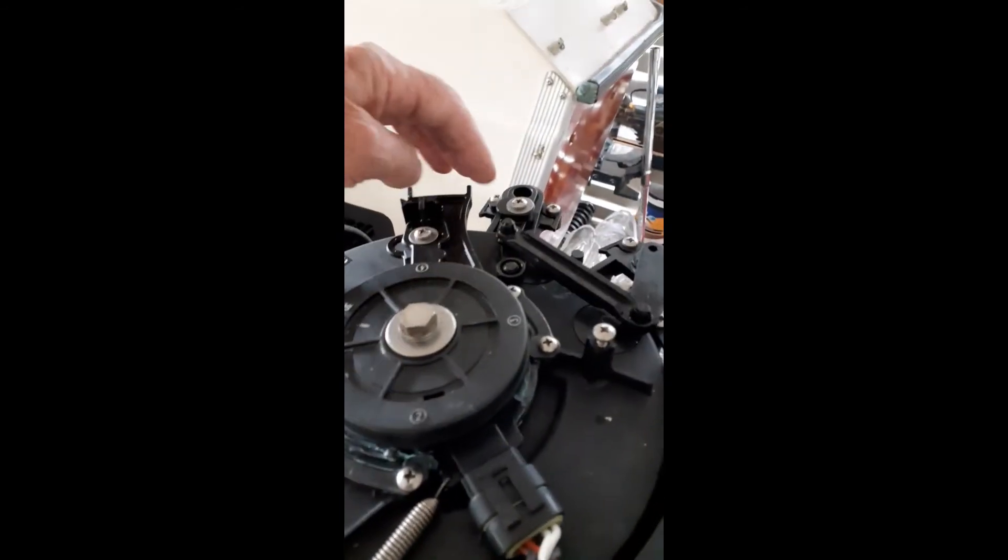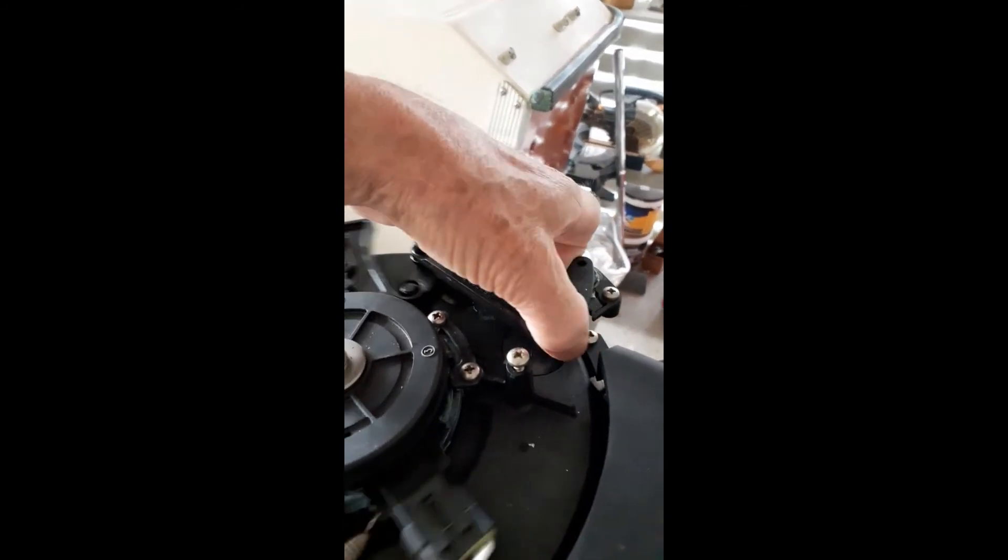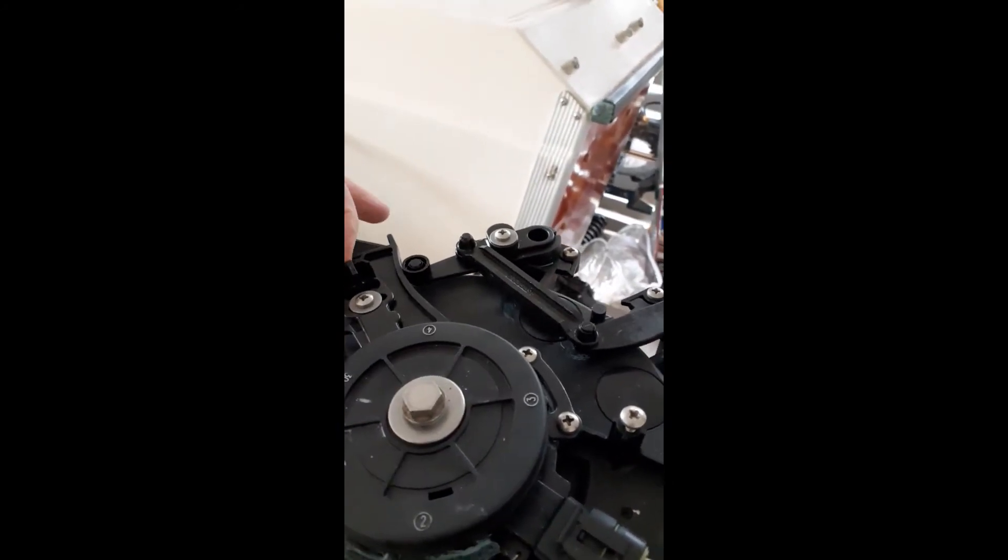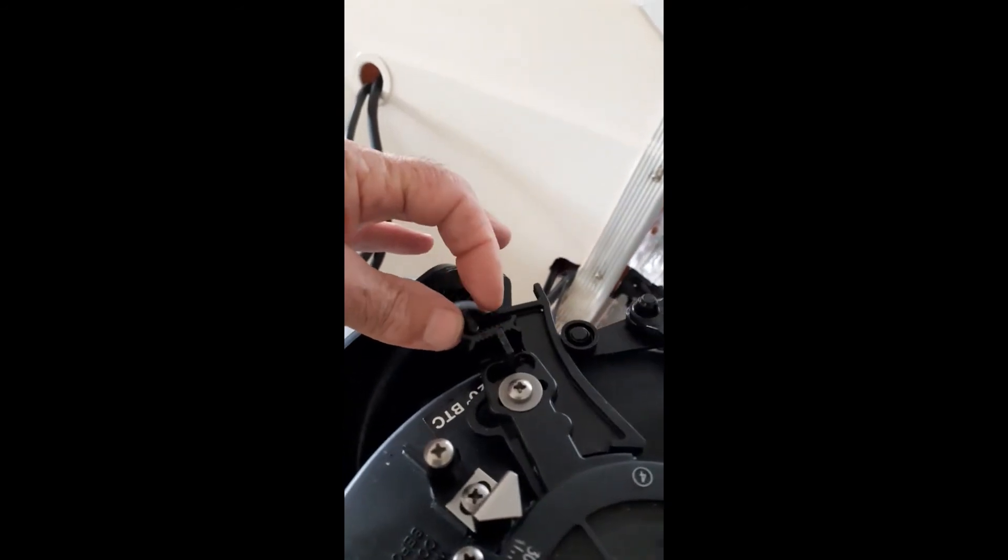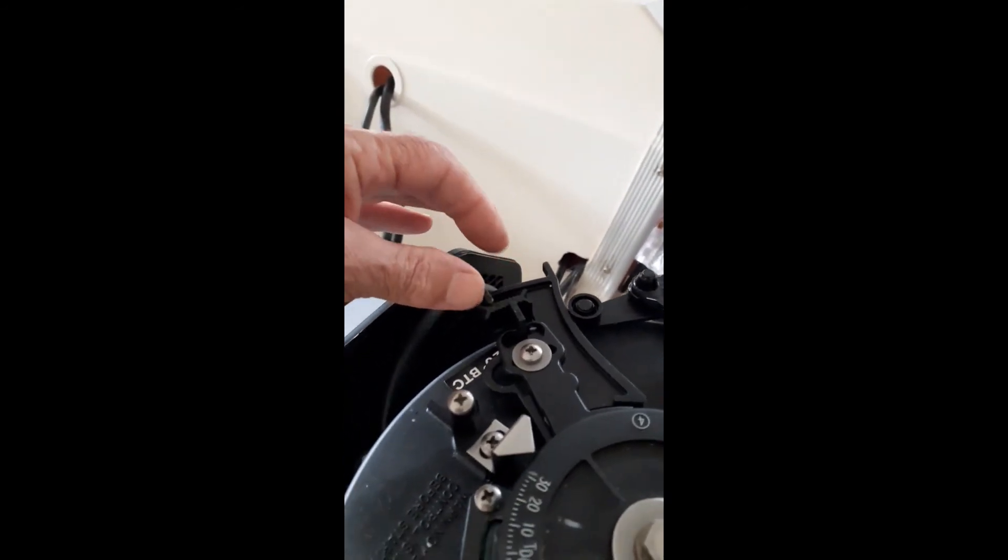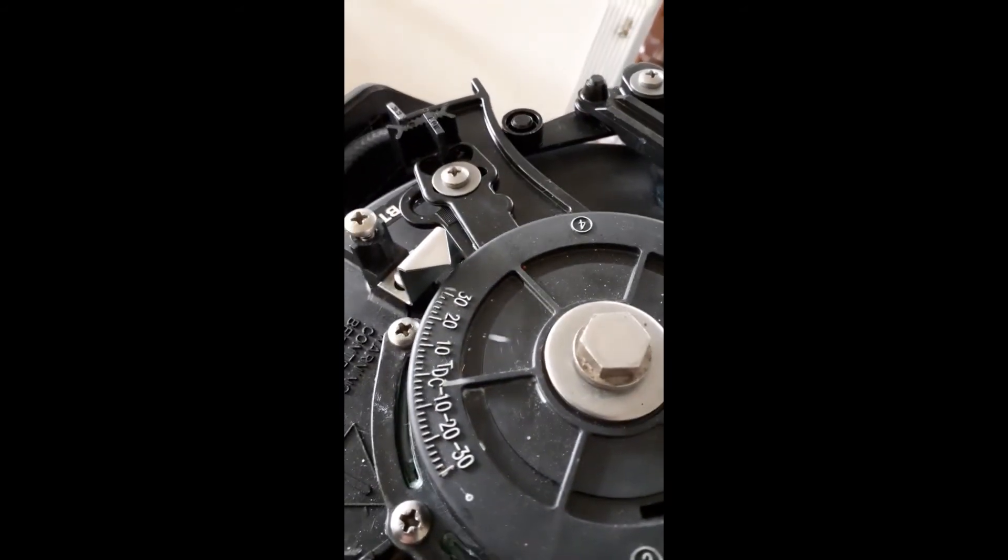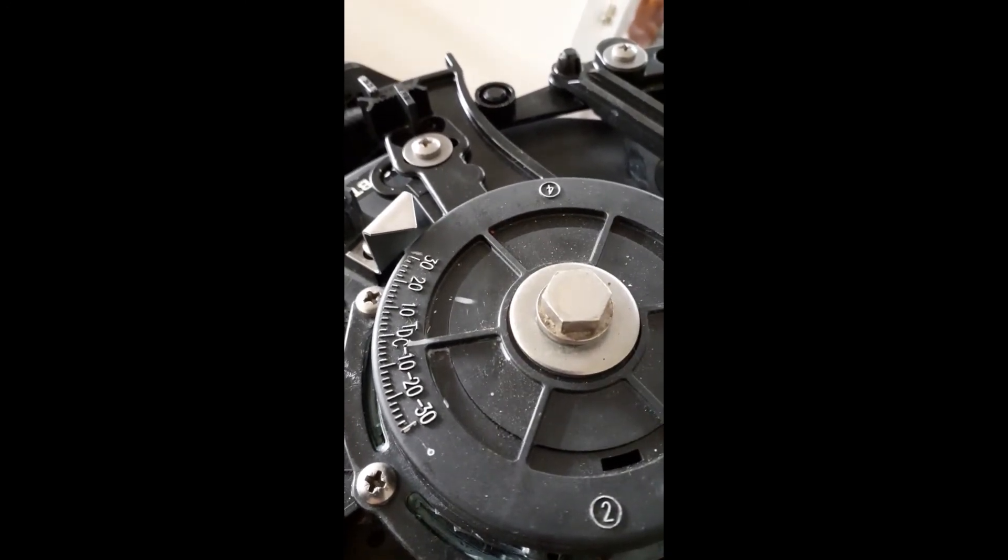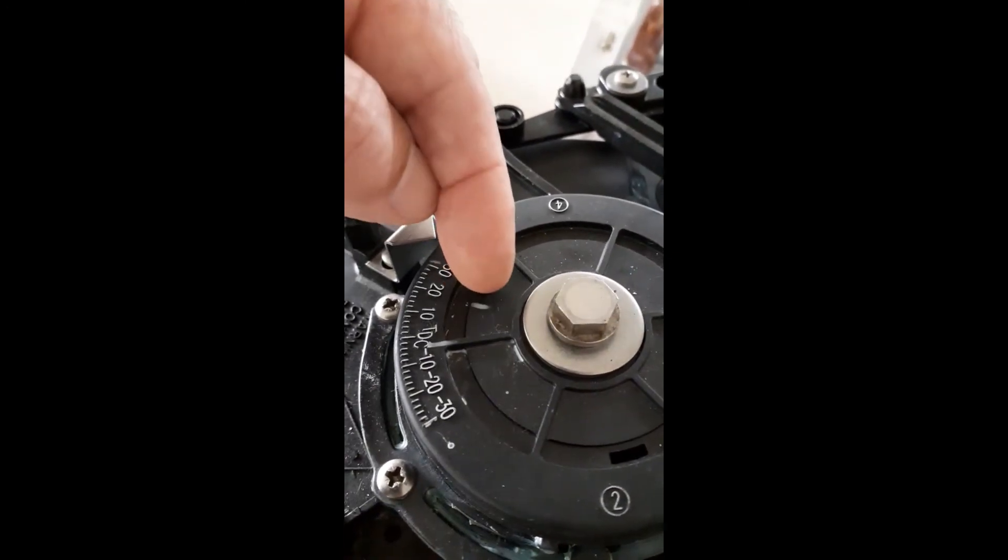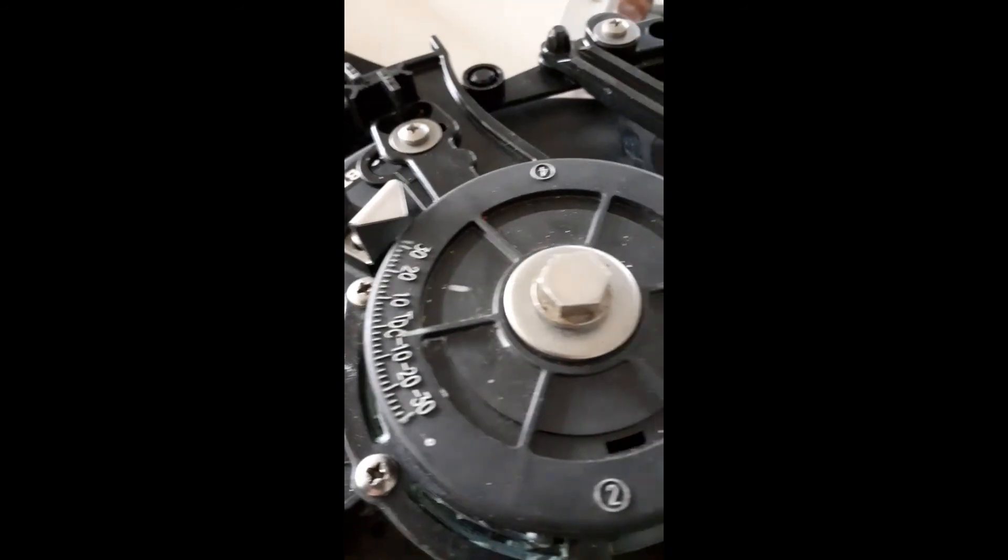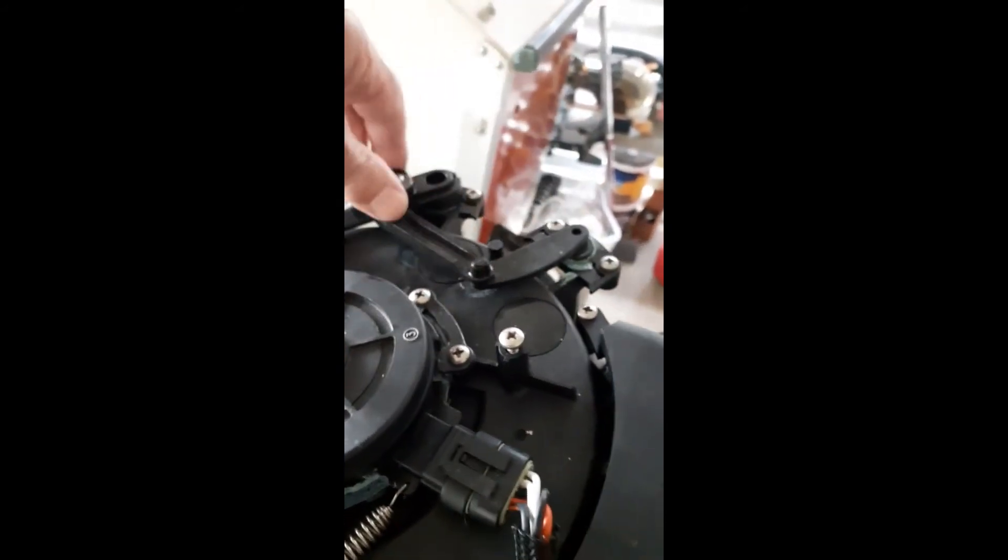Once you've done that, you then advance the spark to full advance and use this outer lever on this grid here to set the wide open throttle advance, which should be set to 20 degrees. I've made little marks on my timing wheel so that I can see exactly where that is. There's this one for the maximum advance and this one for the low speed setting.